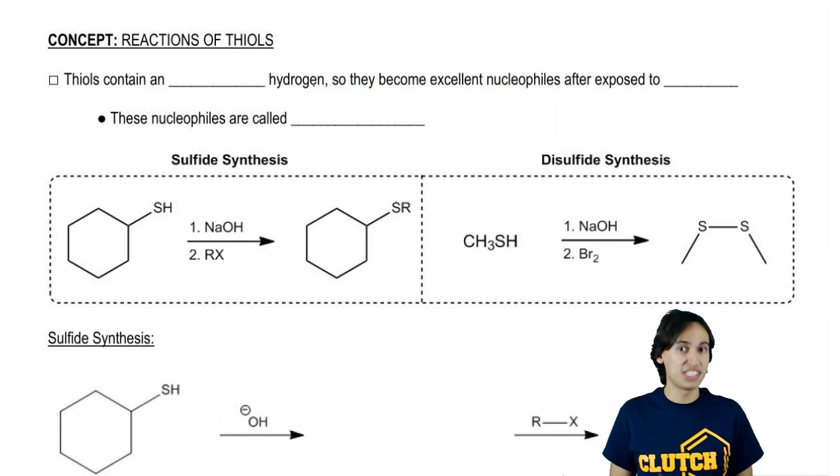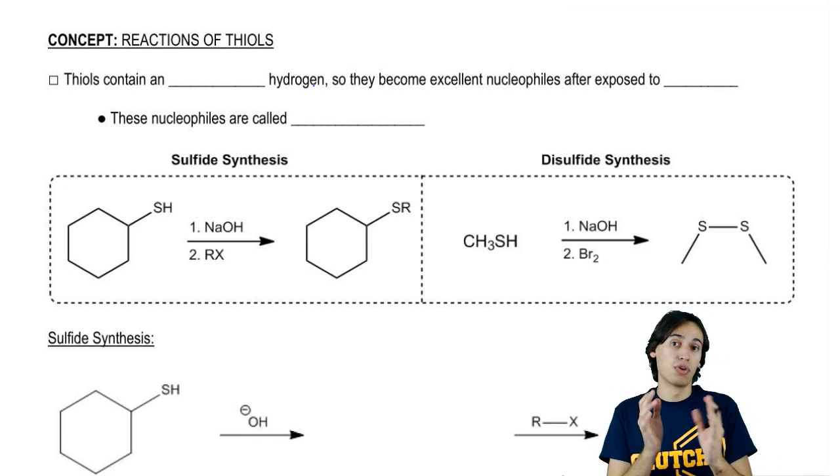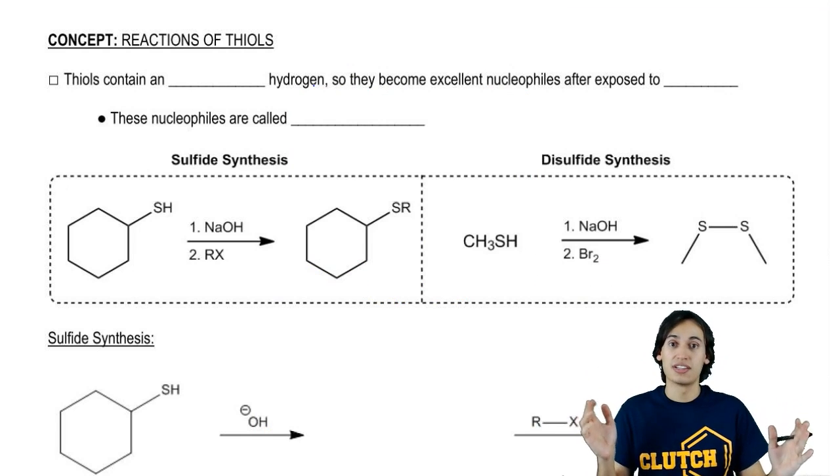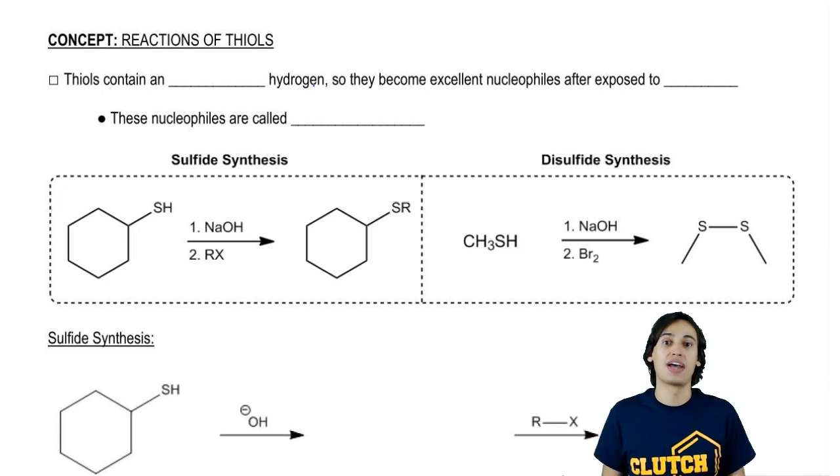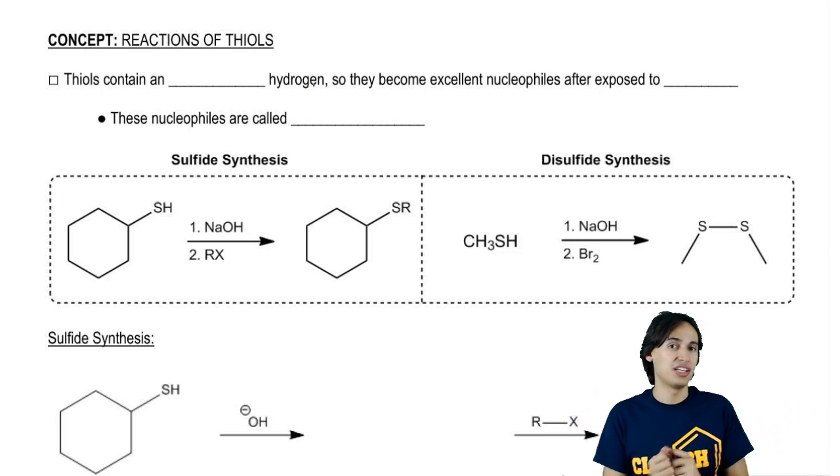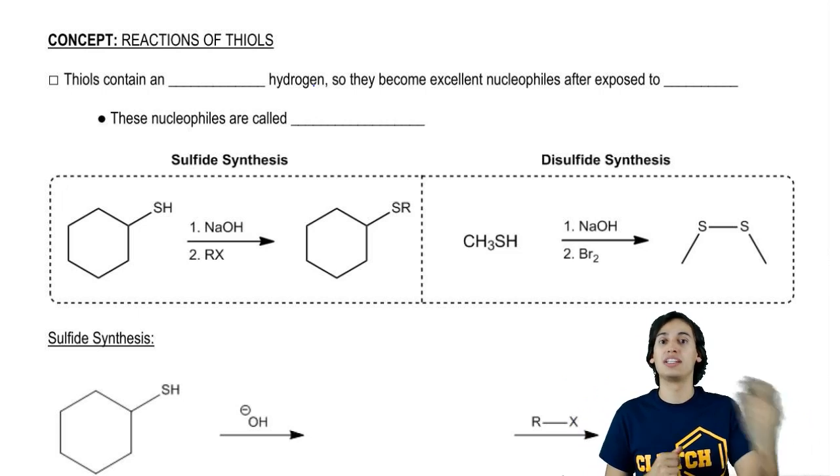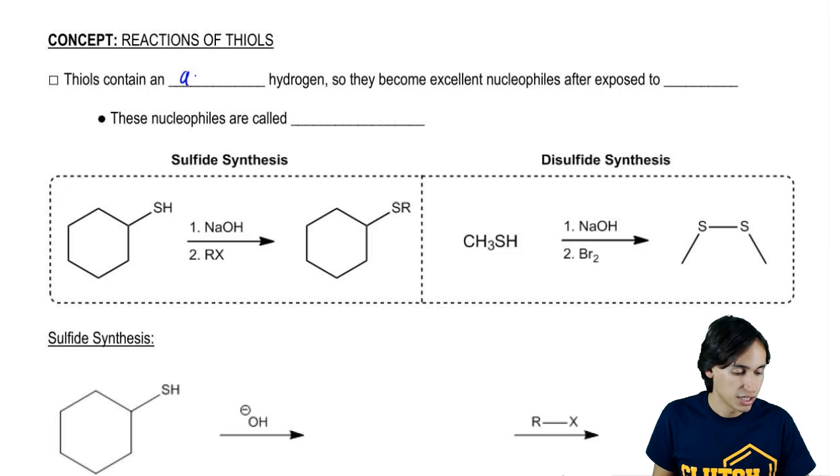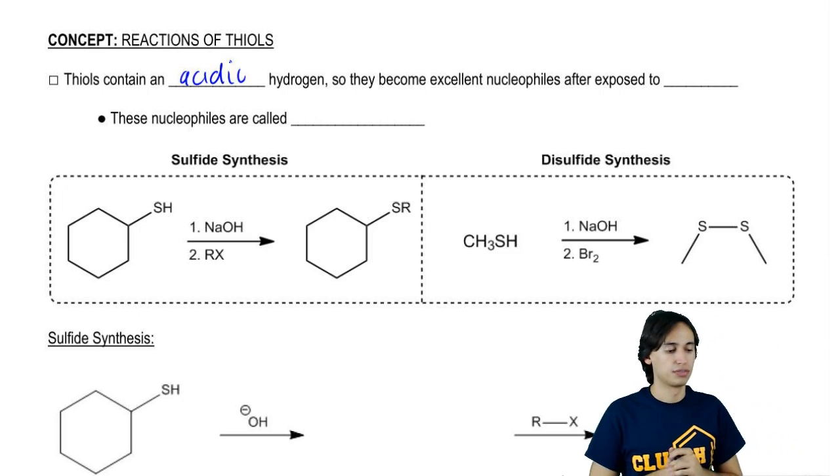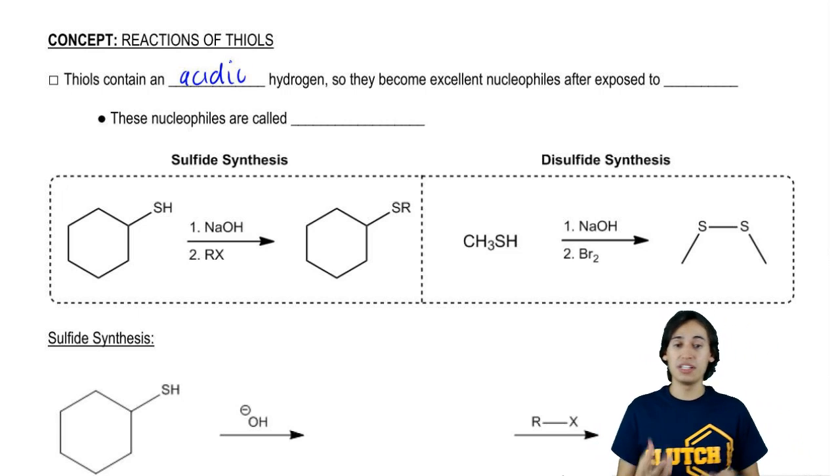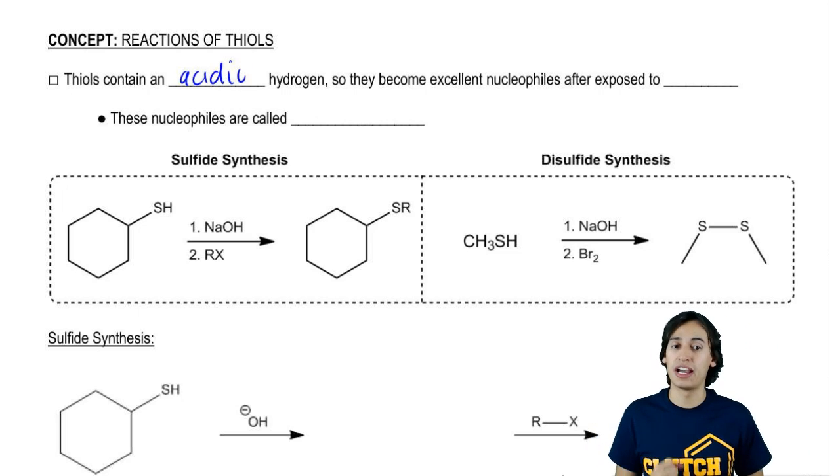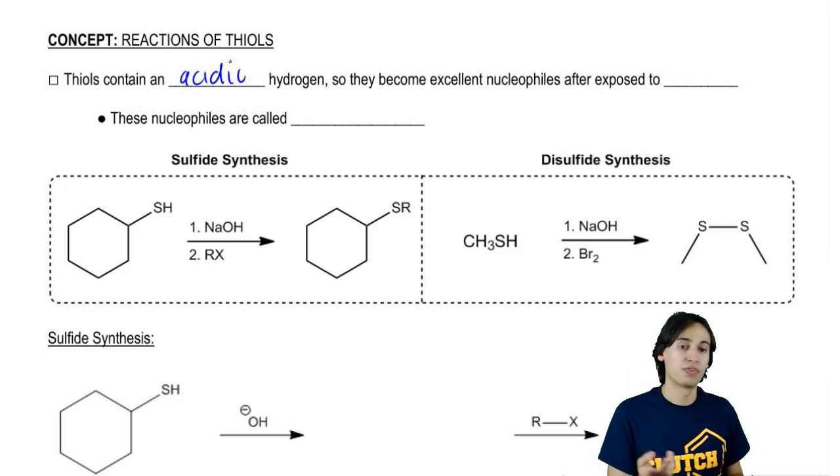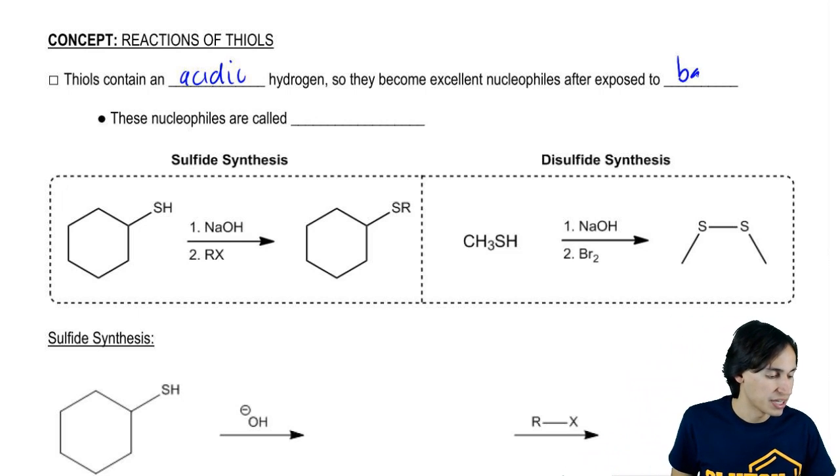Thiols are more acidic than a typical alcohol. If you guys think about it, that has to do with the fact that the sulfur is a little bit bigger in size and the size effect said that as the bigger the molecules get, the easier it is to give up an H and get a lone pair. So thiols are going to contain a very acidic hydrogen. So what that means is that it's going to be easy to pull off that hydrogen and easy to make it a nucleophile after it's exposed to base.